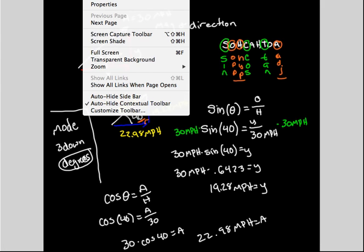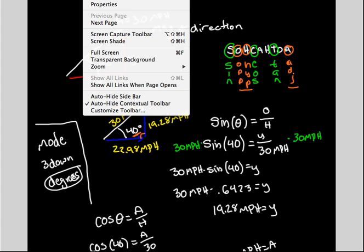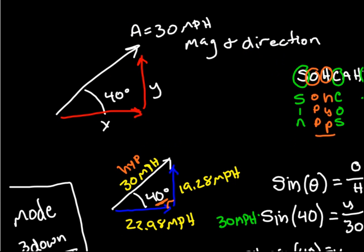So basically, we just found the x and y components of this vector. We have 19.28 mph for y, 22.98 mph for x, and 30 mph for the hypotenuse. Notice that 22.98 is larger than 19.28 — that's because the 40-degree angle is less than 45, which means the triangle is longer in x than in y. That concludes this force vectors tutorial; next I'll be making one on how to add two force vectors.